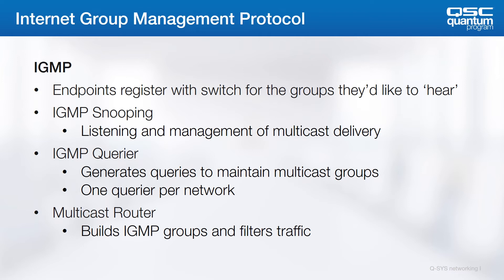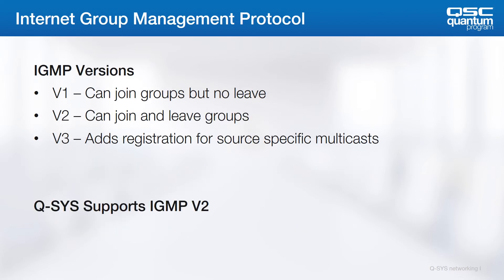The multicast routing function actually decides which streams should go to each port based on the switch's table of registrations — that's ultimately how bandwidth is limited to only the necessary ports. There are three versions of the IGMP protocol. In version 1, groups can be joined but a device can't unregister. In version 2, devices can join and leave groups. Version 3 allows a device to register for groups only transmitted by a specific source. Note that Q-SYS devices support IGMP version 2.